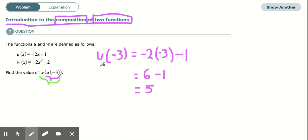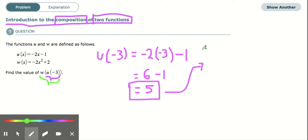So that's u(-3). But now we want to find w of all that. We take our answer and plug that into our w function. So we're going to find w of whatever the answer was, which was 5.